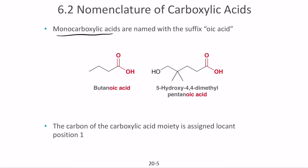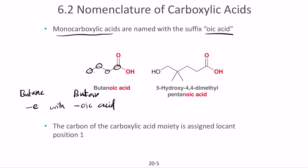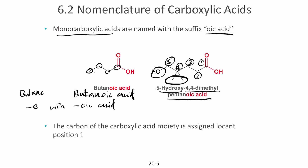Monocarboxylic acids are named with the suffix 'oic acid.' For example, a four-carbon compound with a double bond and OH on the last carbon is butane, so we replace the 'e' with 'oic acid' to get butanoic acid. If there are side chains, the carbon containing the carboxylic group always gets the first number. So numbering one through five, with two methyl groups on carbon four and one hydroxy group on carbon five, it becomes 5-hydroxy-4,4-dimethylpentanoic acid.